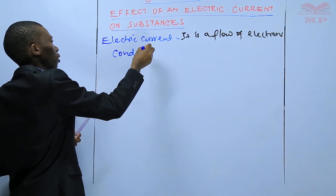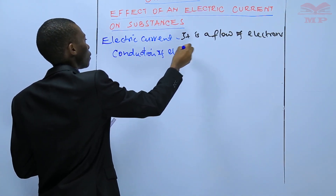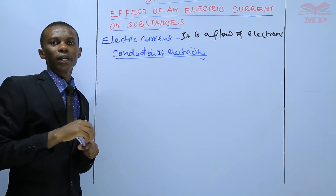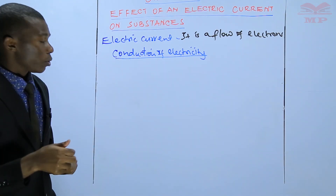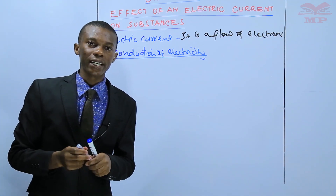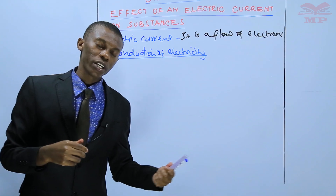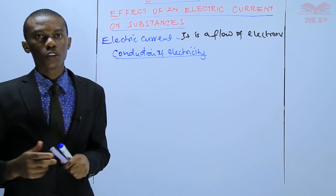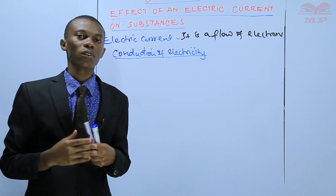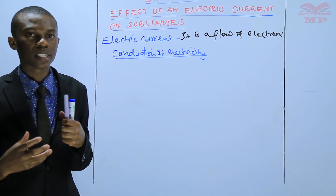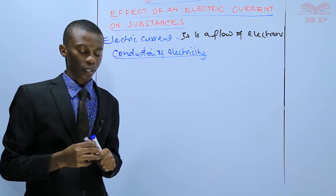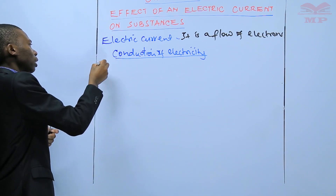Some substances conduct electricity while others do not. Those that conduct electricity we call them conductors. Conductors are those substances which allow electric current to pass through them. So we define the first term which is conductor.